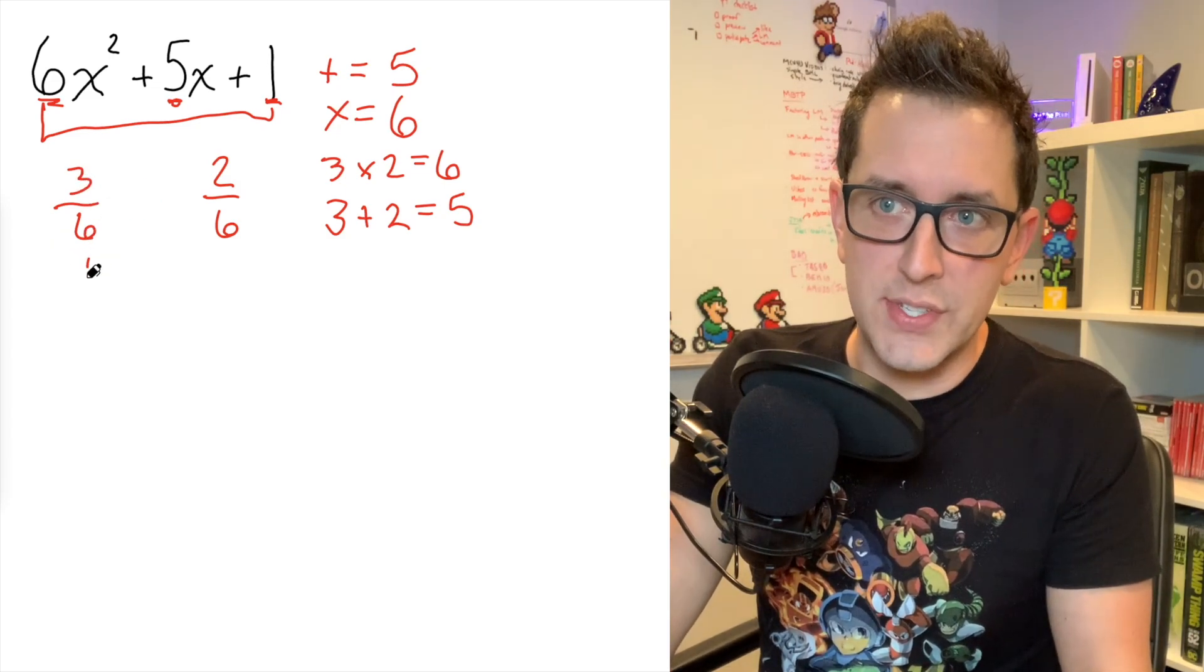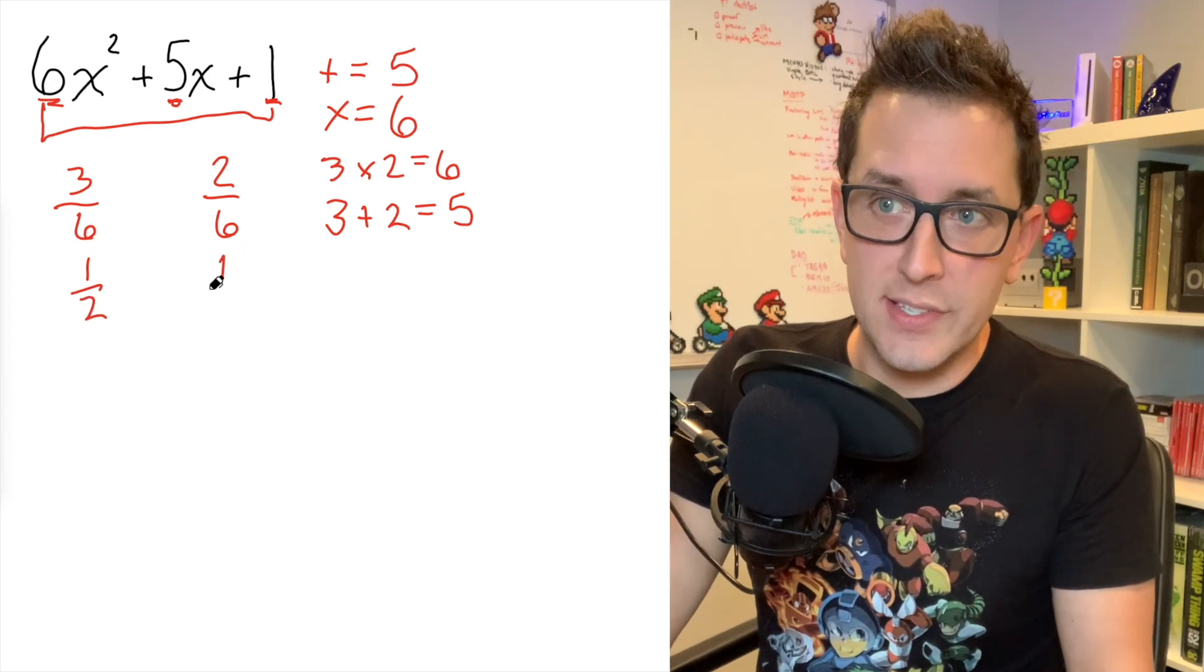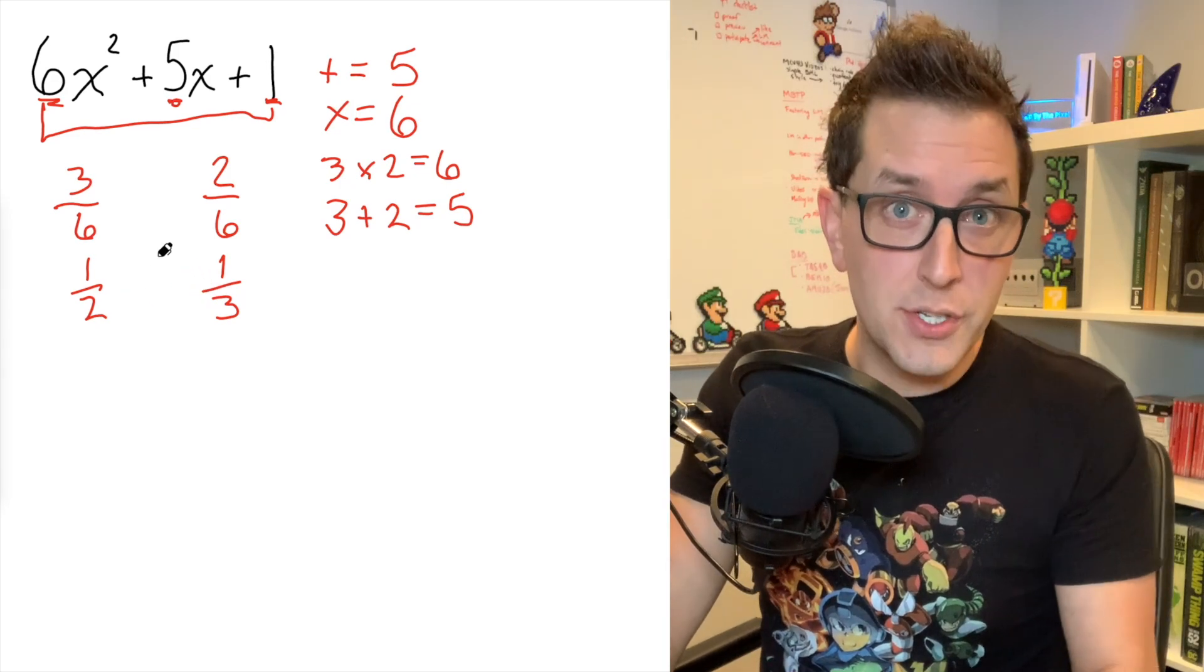So we know that three over six, that's just the same thing as a half. And we know that two over six, that's just the same thing as one third. So we ended up with two simpler fractions reduced to lowest terms.